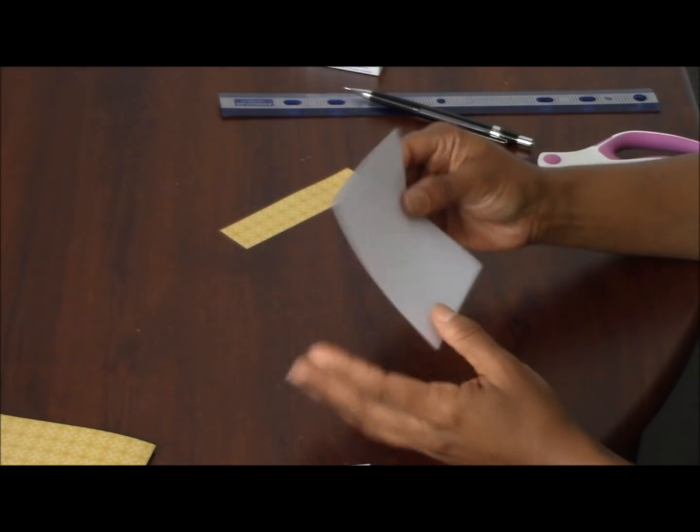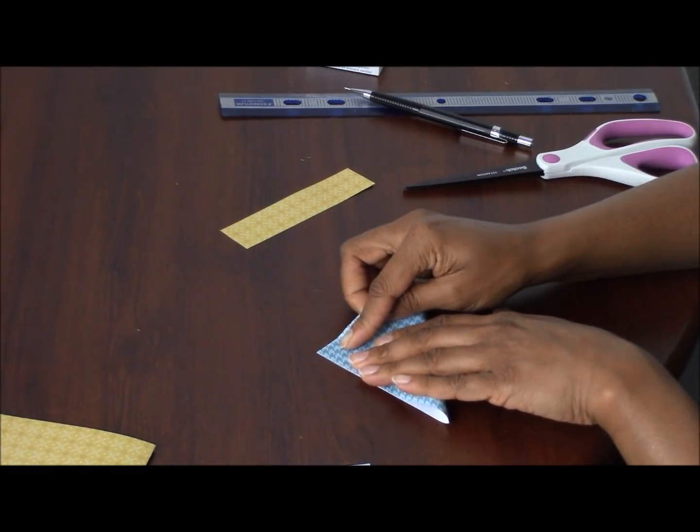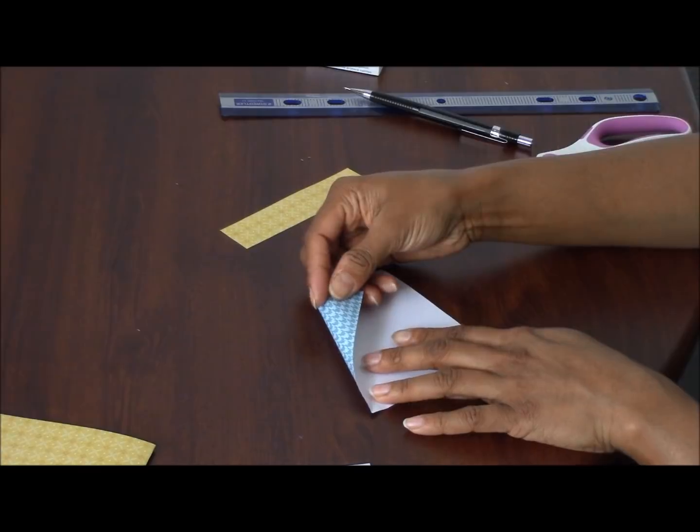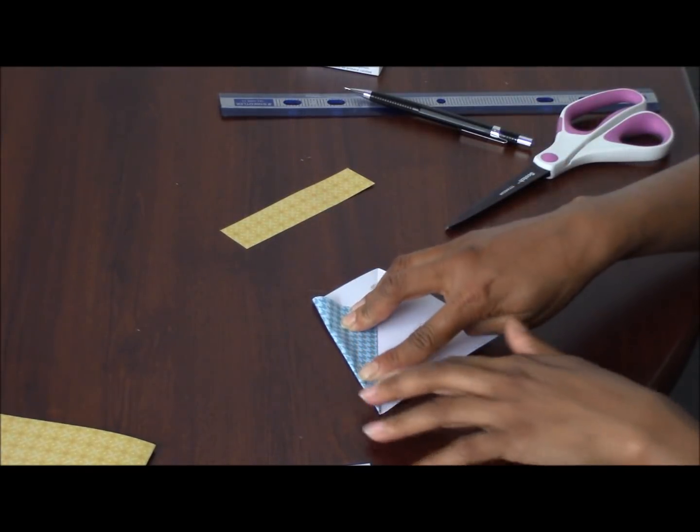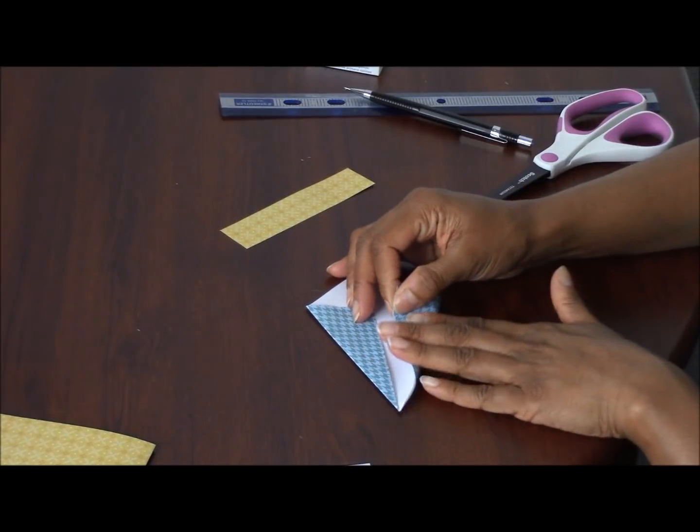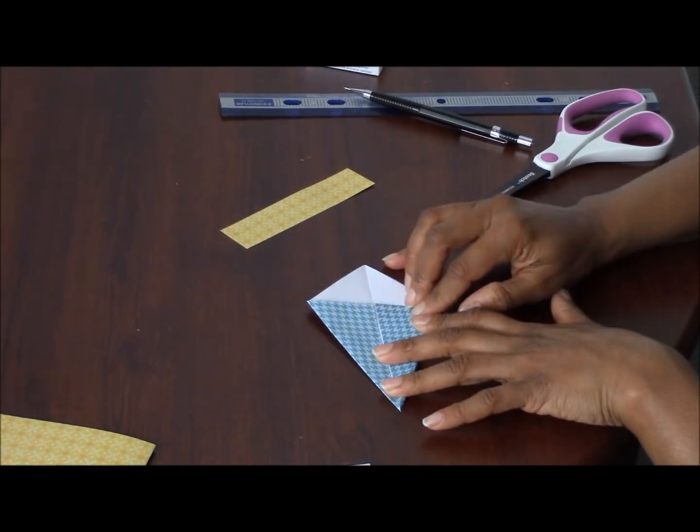Fold it in half to make a triangle. Bring the sides together at the center fold, nice and neat. Let's zoom in a bit.